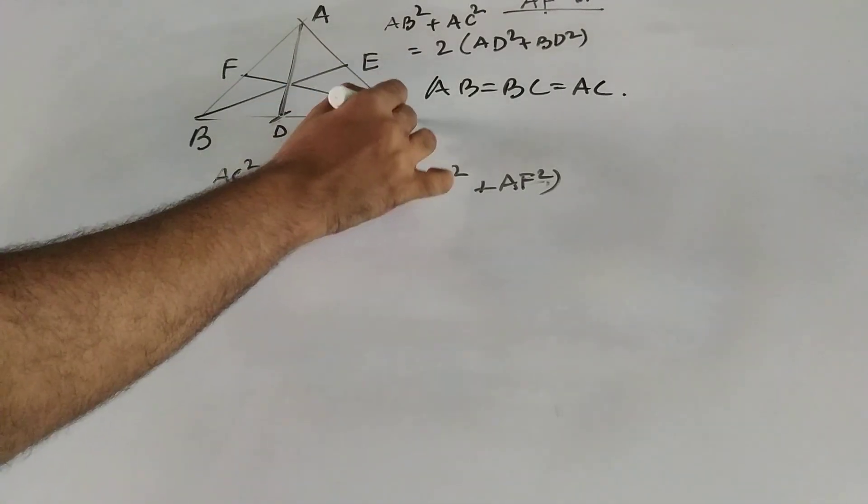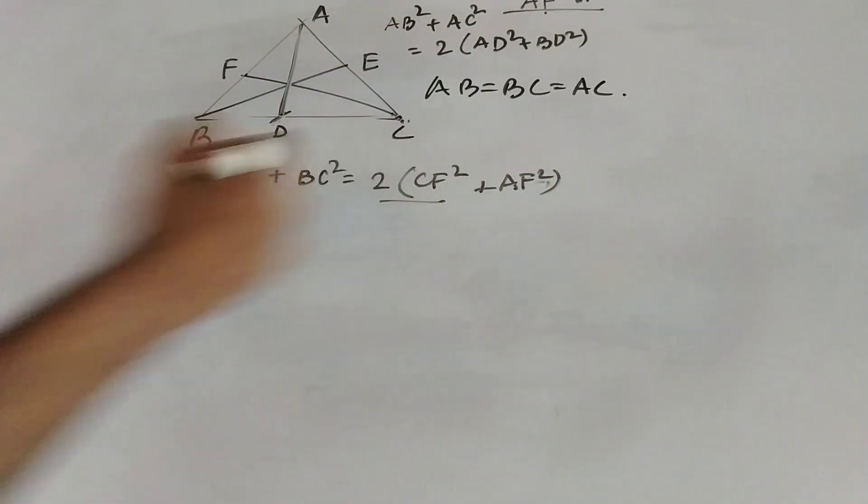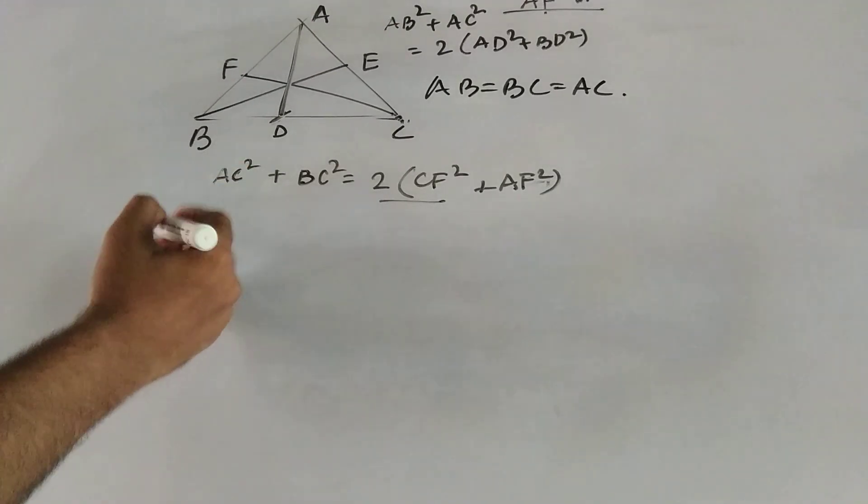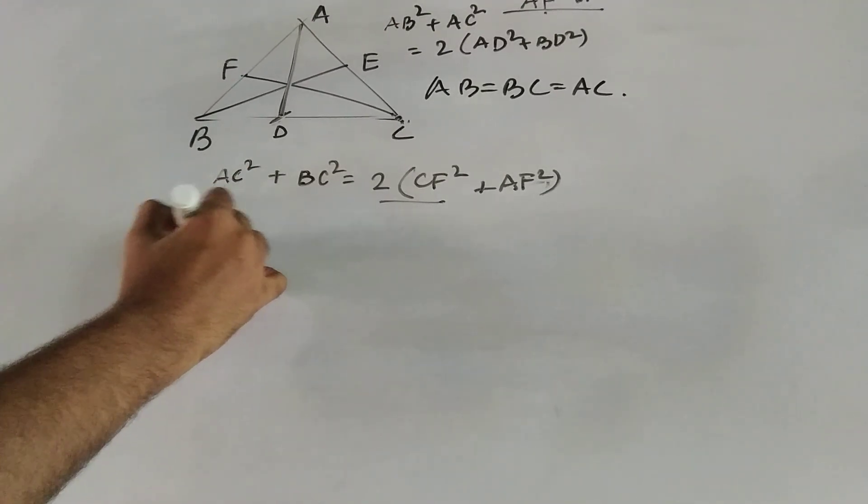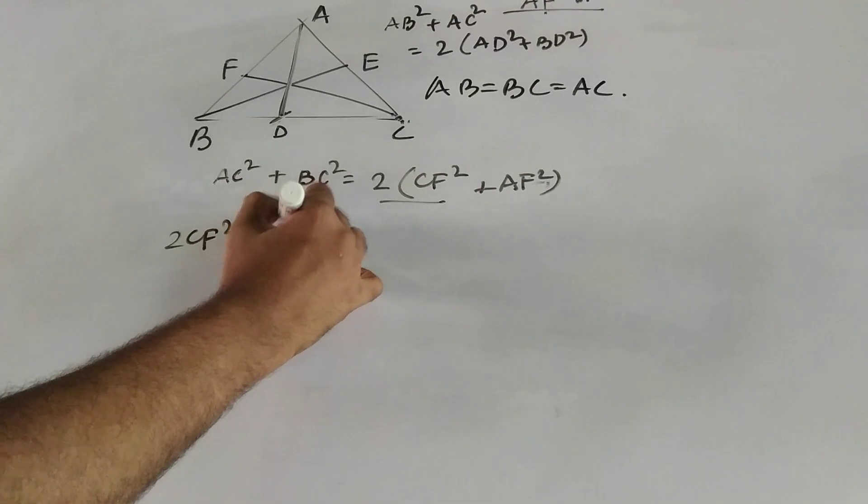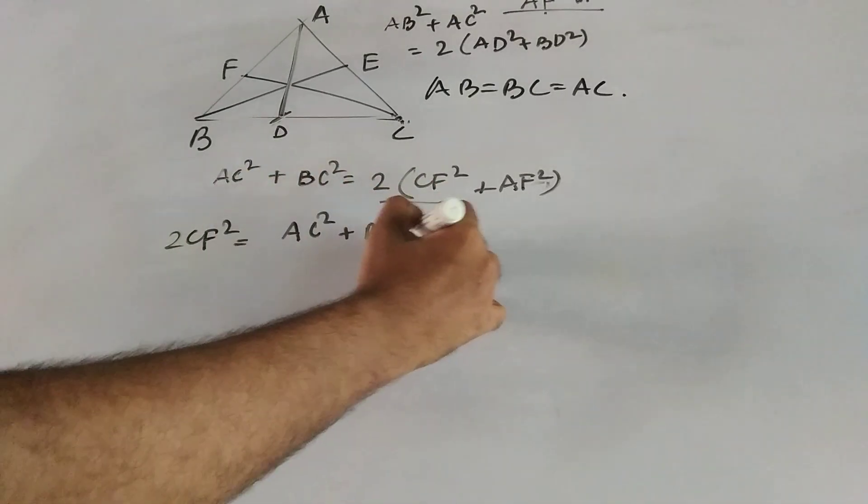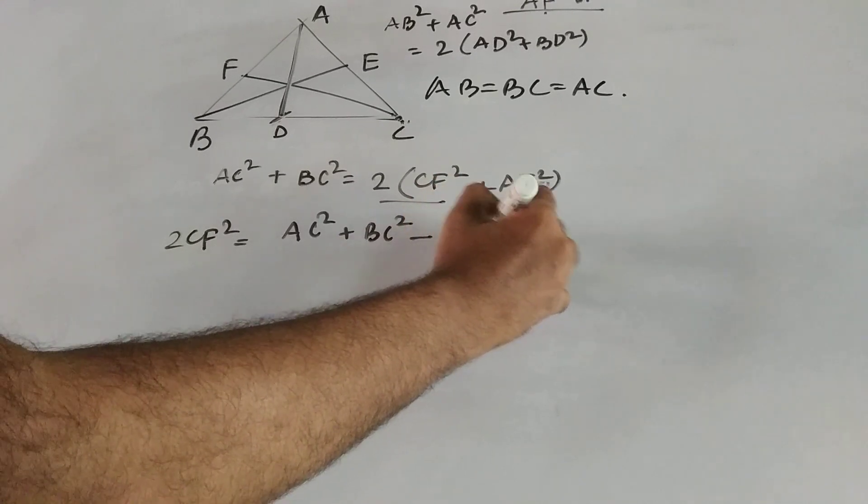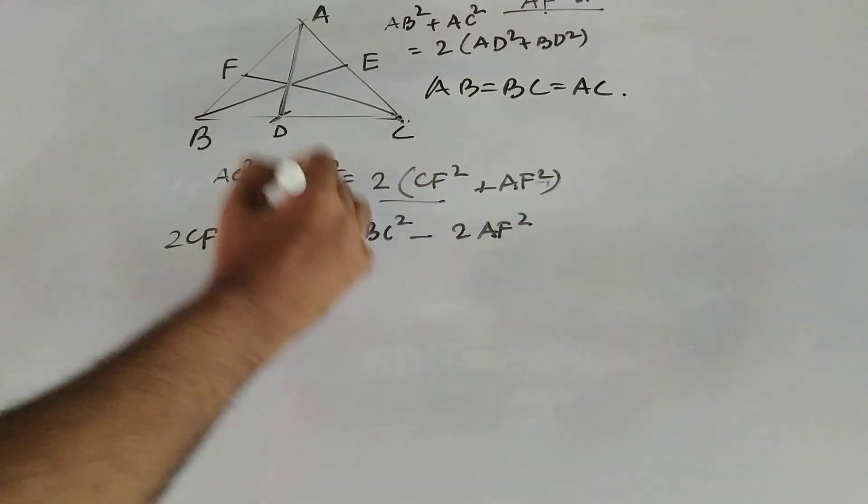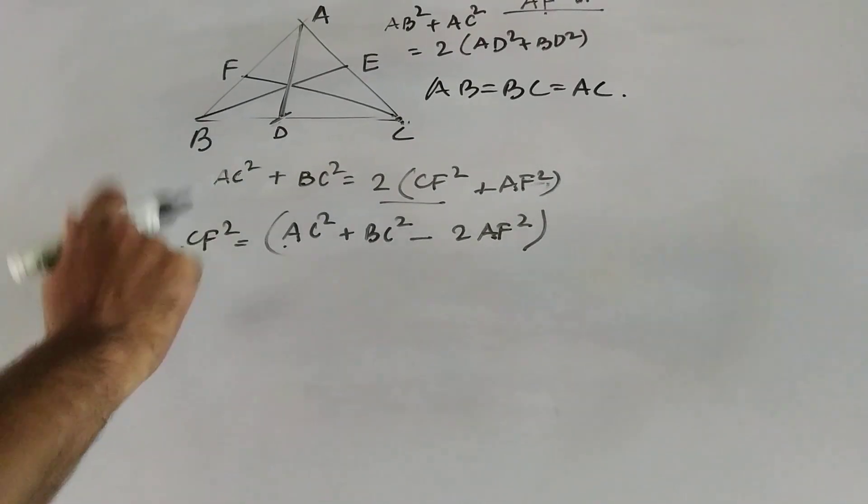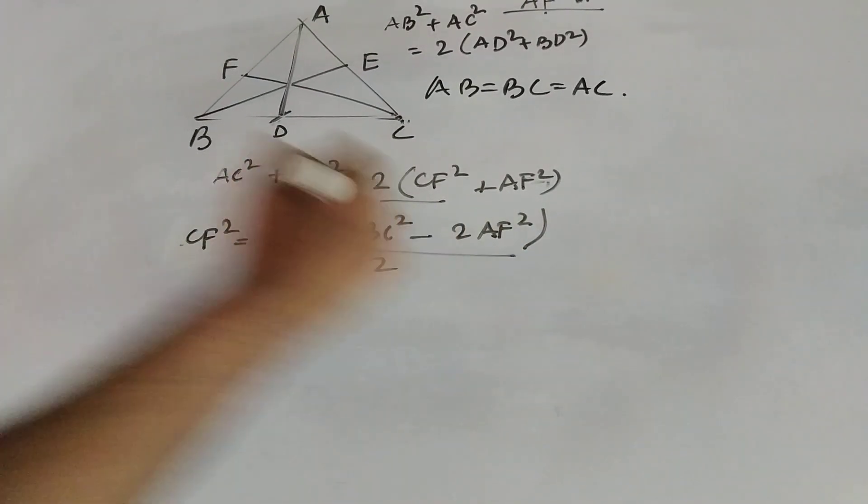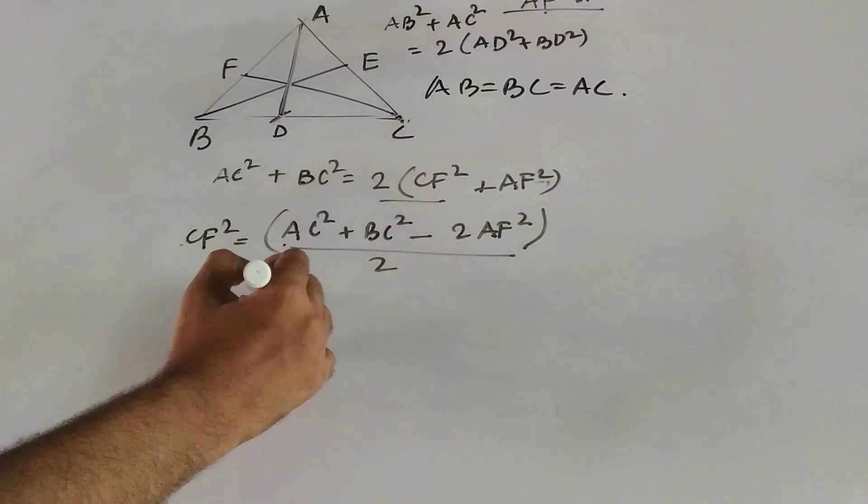So what is the length of CF? If we just take CF in one side of the equality sign, then 2 CF square equal to AC square plus BC square minus 2 AF square. This is the 2 CF square. So what is CF square? If we simply divide this by 2.